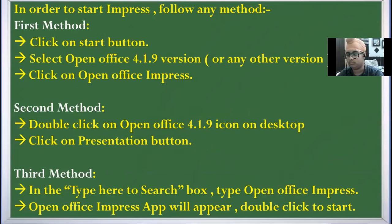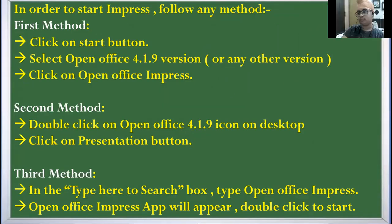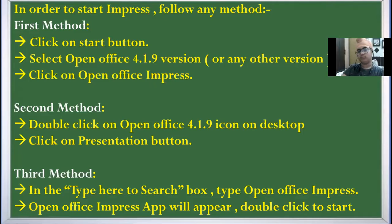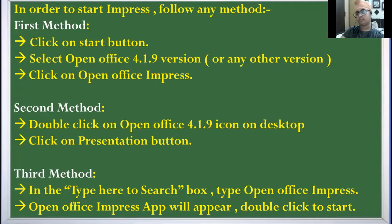Now, in how many ways can we start Impress software? We are studying OpenOffice Impress — the version I have taken is 4.1.9; 4.1.10 is also available, you can download that. Now how to start Impress: first of all, click on the Start button, select OpenOffice 4.1.9 or any other version you have installed, and inside that click on OpenOffice Impress.